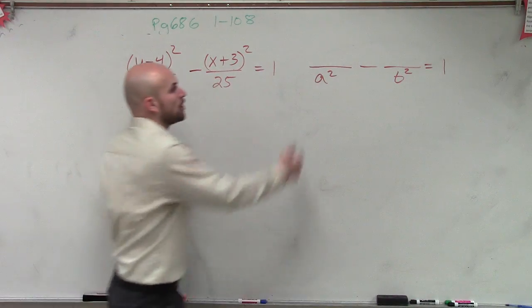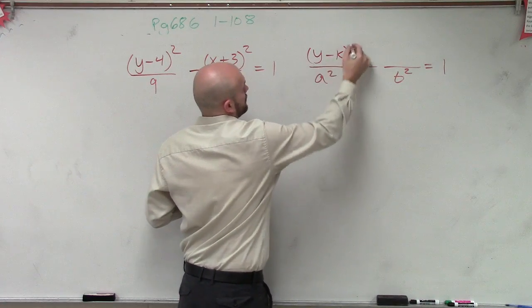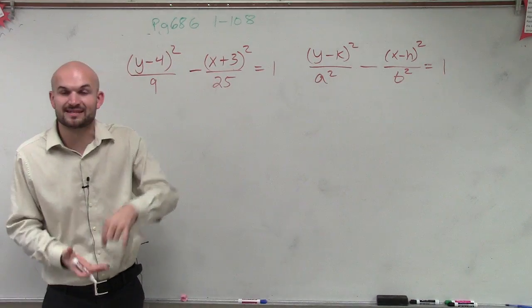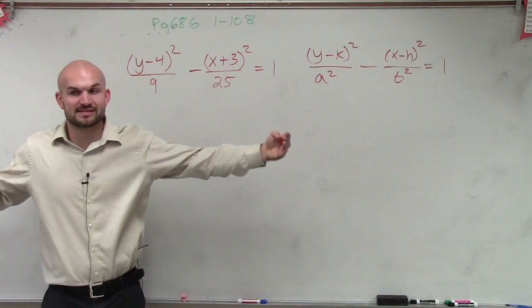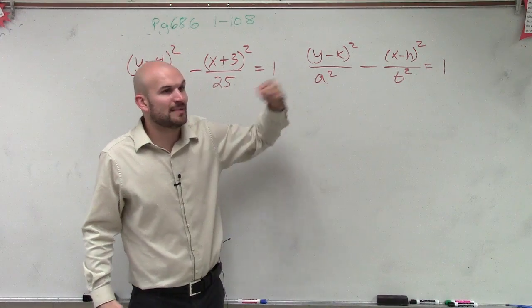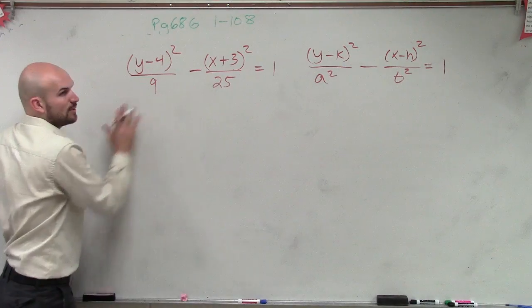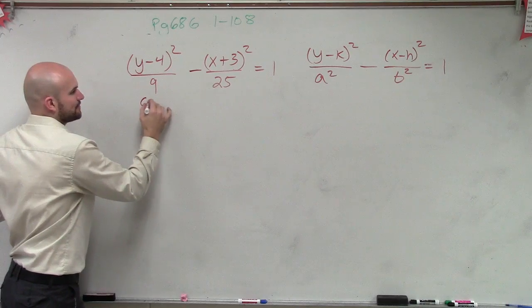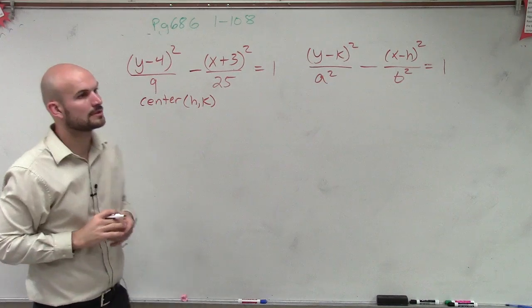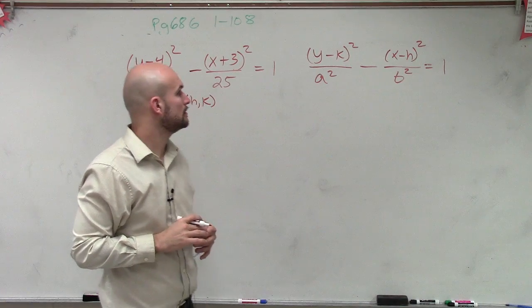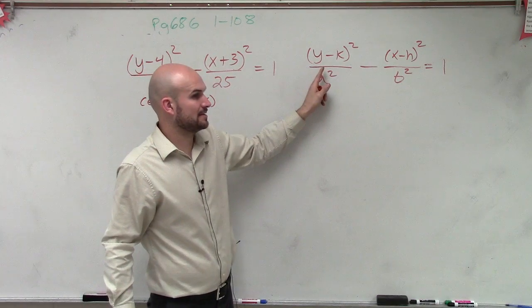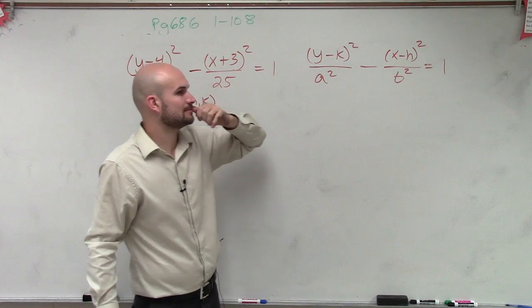So they're going to ask us to graph this. But remember, when we were talking about hyperbolas, it's always a squared minus b squared equals 1. And since in this case I have the y over my a and the x is over my b, what type of hyperbola do I have? Do I have a hyperbola that's going to be opening transverse axis vertical, or is the transverse axis going to be horizontal? Vertical, right?